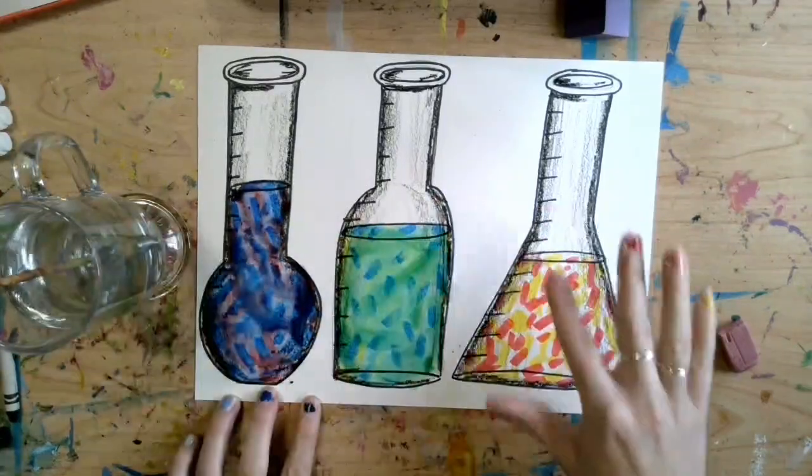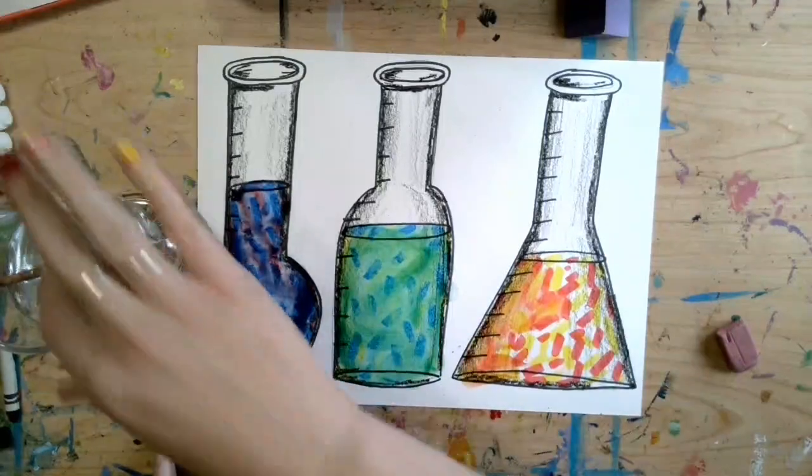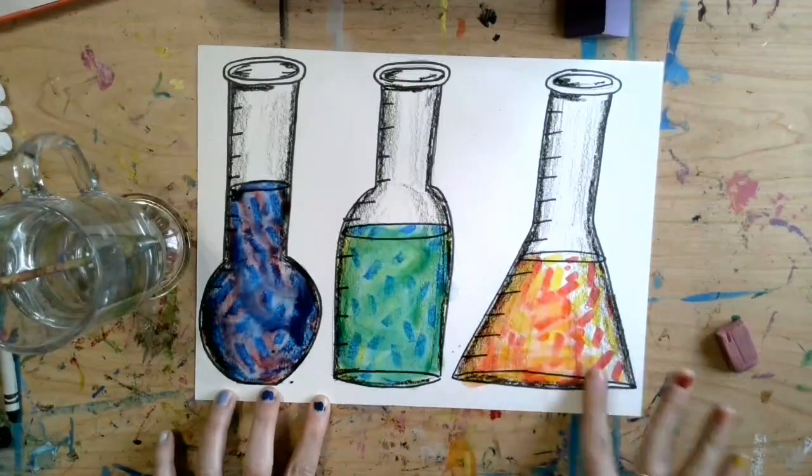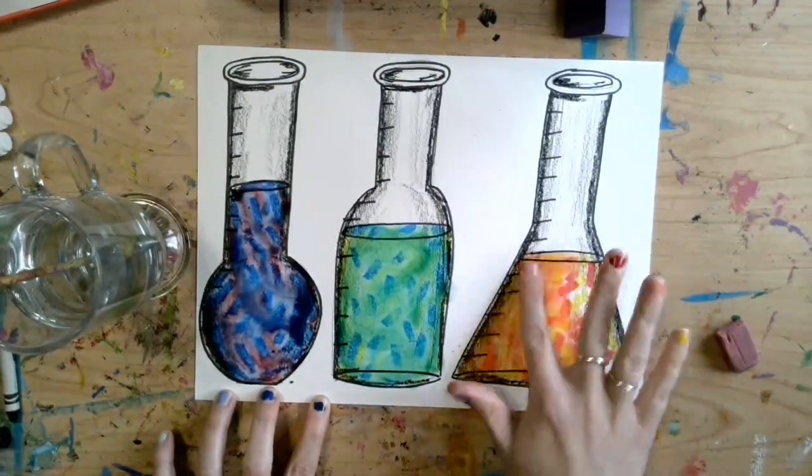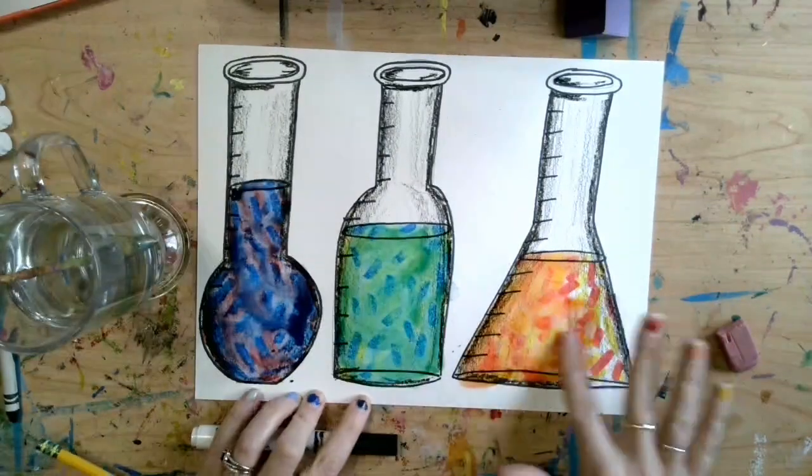Now, I said if you had a permanent marker, you could outline right away. But if you only had a Crayola marker, you should wait. Because if you wanted to outline with black and you only had a Crayola marker like this, it would have started to mix when we added the water.